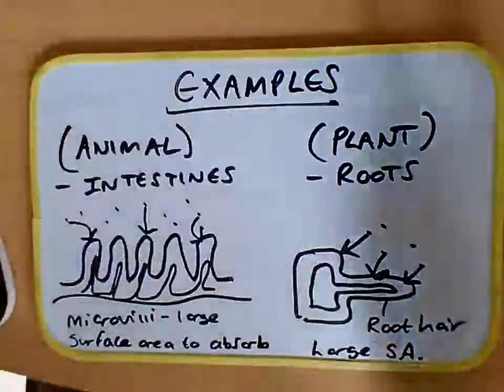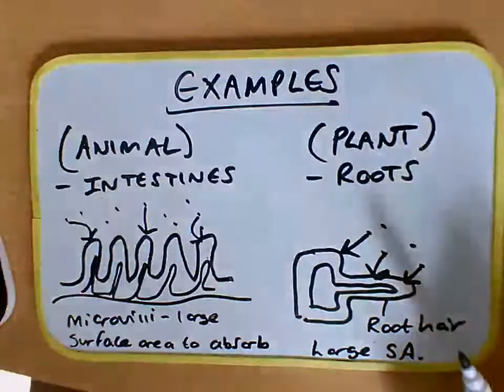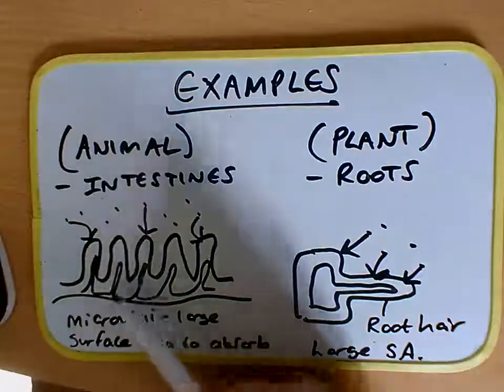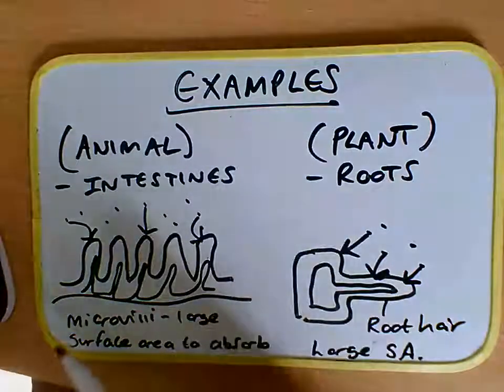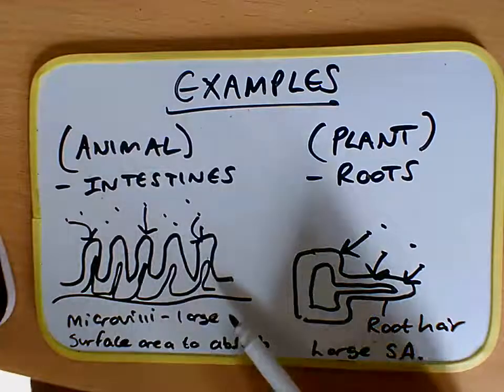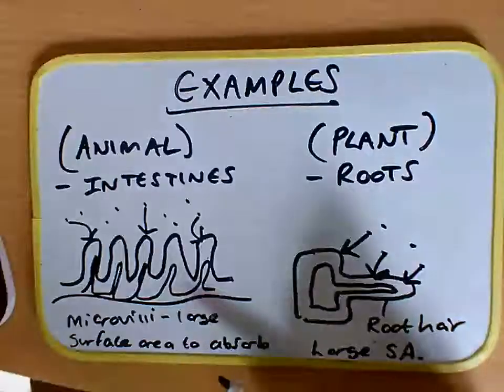Some examples: we've got an example for an animal, the intestines, and then an example for a plant, the roots. Lining the small intestine we have these folds and they're called microvilli.